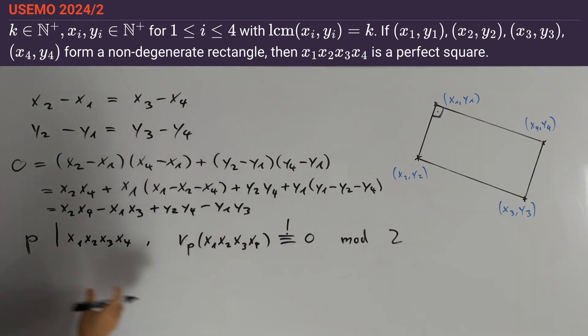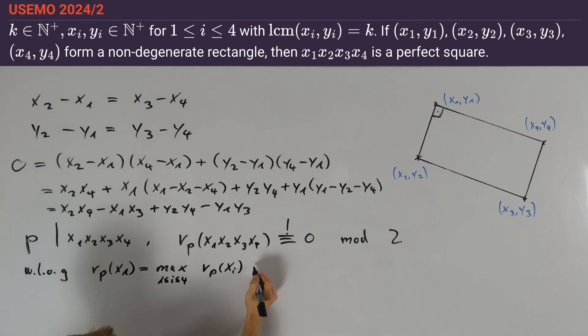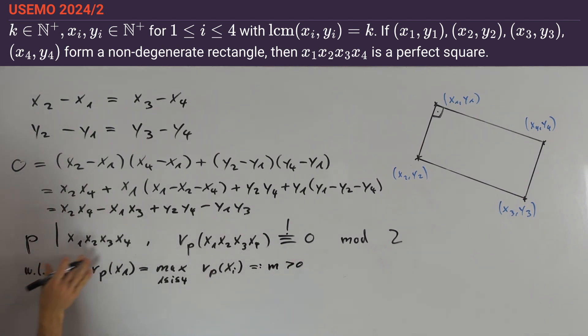This especially implies that if p divides one of the xi with high multiplicity, it also divides another xj or yj with high multiplicity. To make this formal, without loss of generality assume nu_p(x1) is the maximum of nu_p(xi) for 1 ≤ i ≤ 4, and define this to equal m, which is greater than zero since p divides the product.